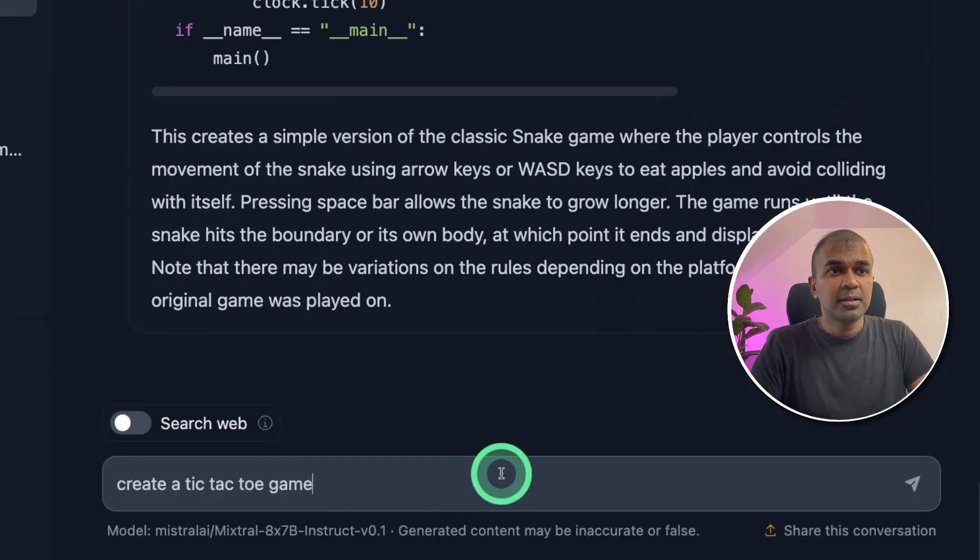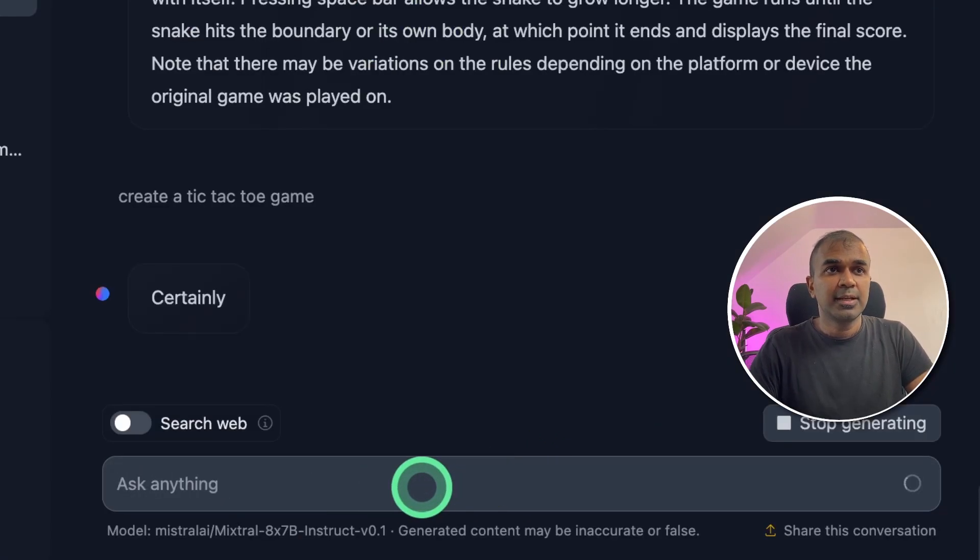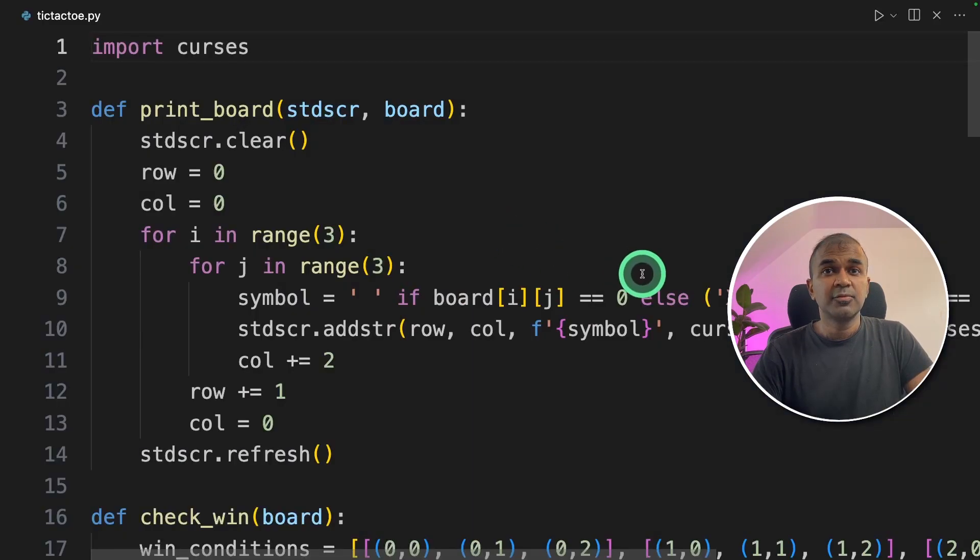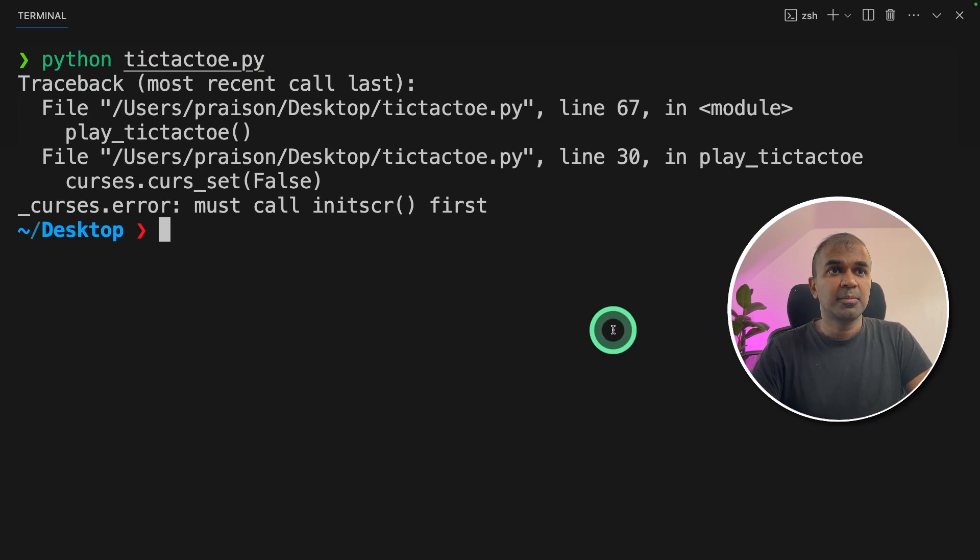Now I'm going to ask, create a tic-tac-toe game and click enter. The code got created now. I'm going to copy this, pasted that in VS code. Now I'm going to run python tic-tac-toe game. It says must call init scr first. So it's a fail.